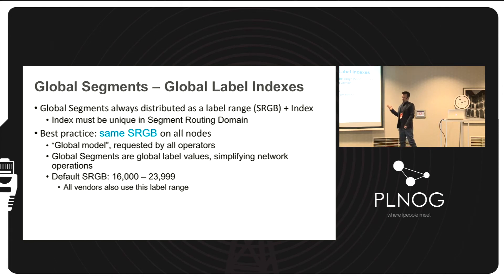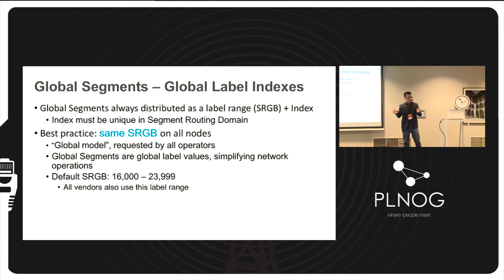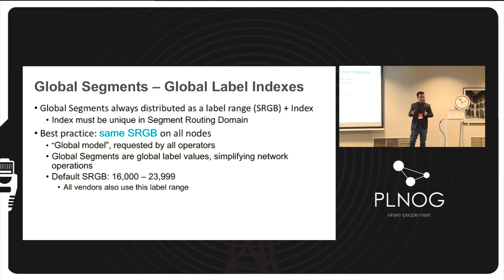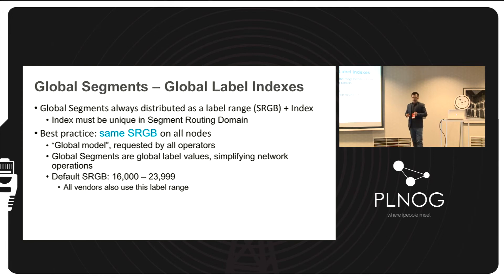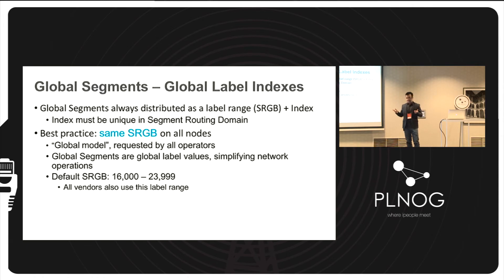The SRGB — Segment Routing Global Block — is simply a pool of labels ready to be assigned to prefixes. The best practice is to keep it the same across all devices, especially in multi-vendor environments, to avoid interoperability issues. With segment routing, the SRGB starts at 16,000 and goes up to 24,000, giving approximately 8,000 available labels to assign.